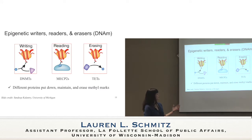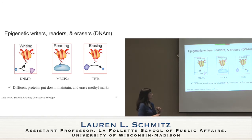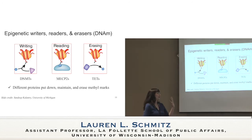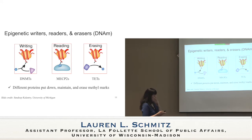There are epigenetic writers, readers, and erasers. The writers are putting down the methyl marks, and then we have proteins that read them, and also proteins that can erase the methyl marks — these TET proteins. This is really important in cancer research, where there's a lot of work looking at how we can create drugs that might unmethylate or methylate certain areas of the genome, especially in tumor suppressor genes. What's potentially fascinating about epigenetics is that it's reversible.